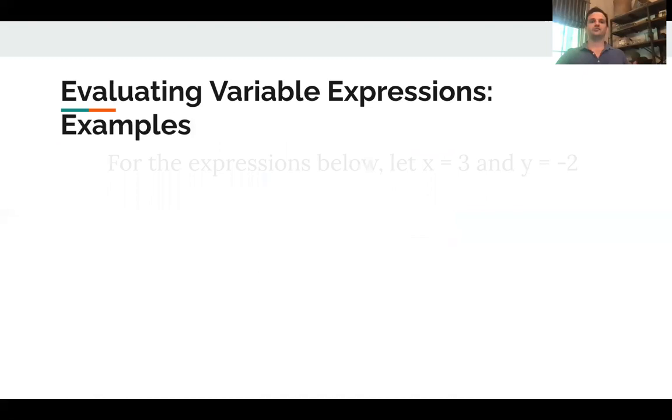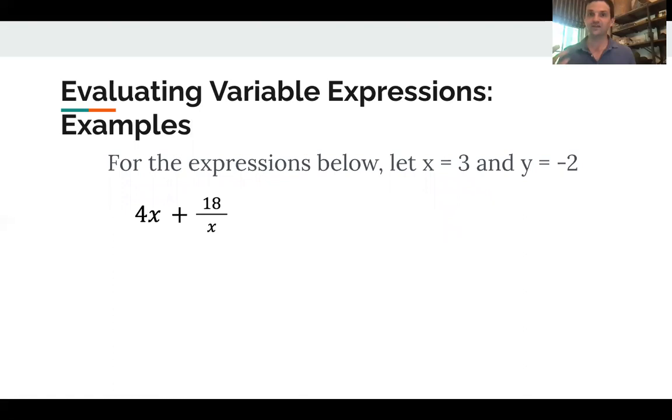So let's look at a couple examples here. For these expressions, it says let x equal 3 and y equal negative 2. So now you see that 4x means 4 times x. It means whatever x is, I want to do 4 times that thing. So I'm going to start by rewriting the problem. I'm going to put times, and then in my color I'm going to put 3 because the value of x is 3 plus 18 over 3 again.